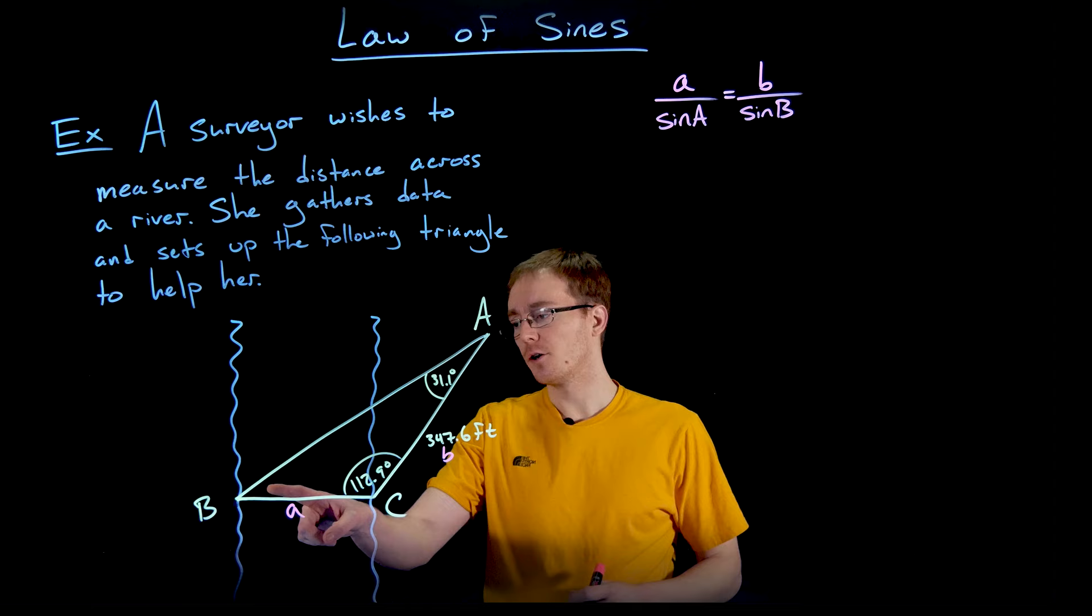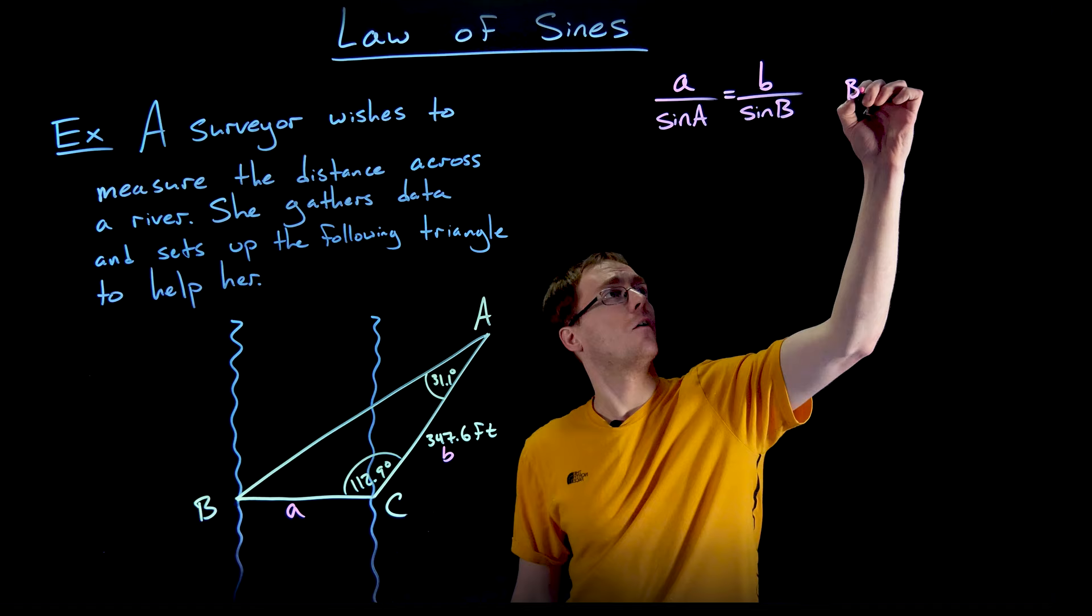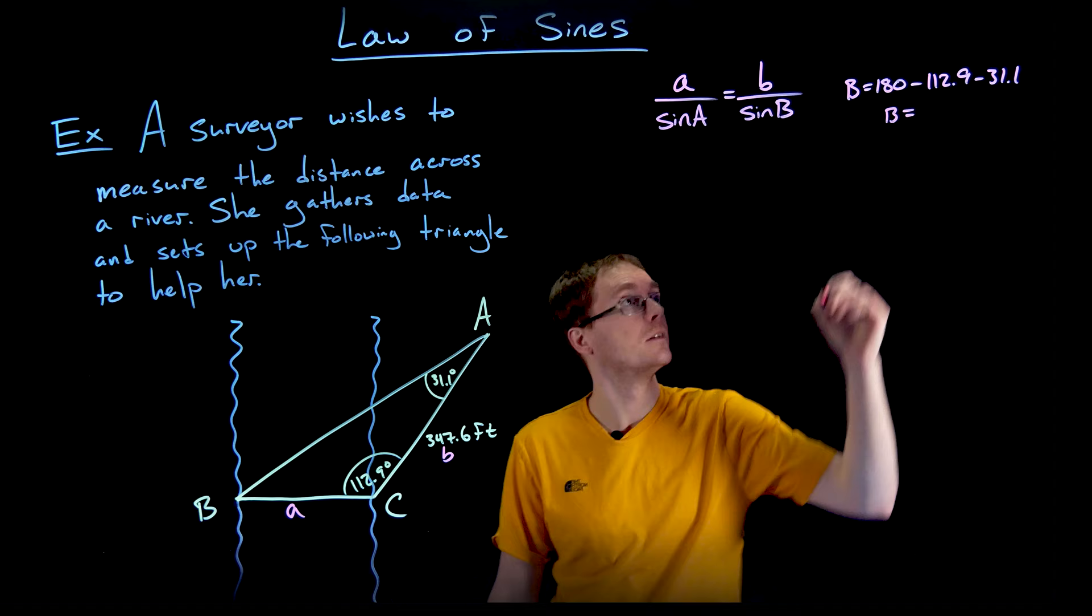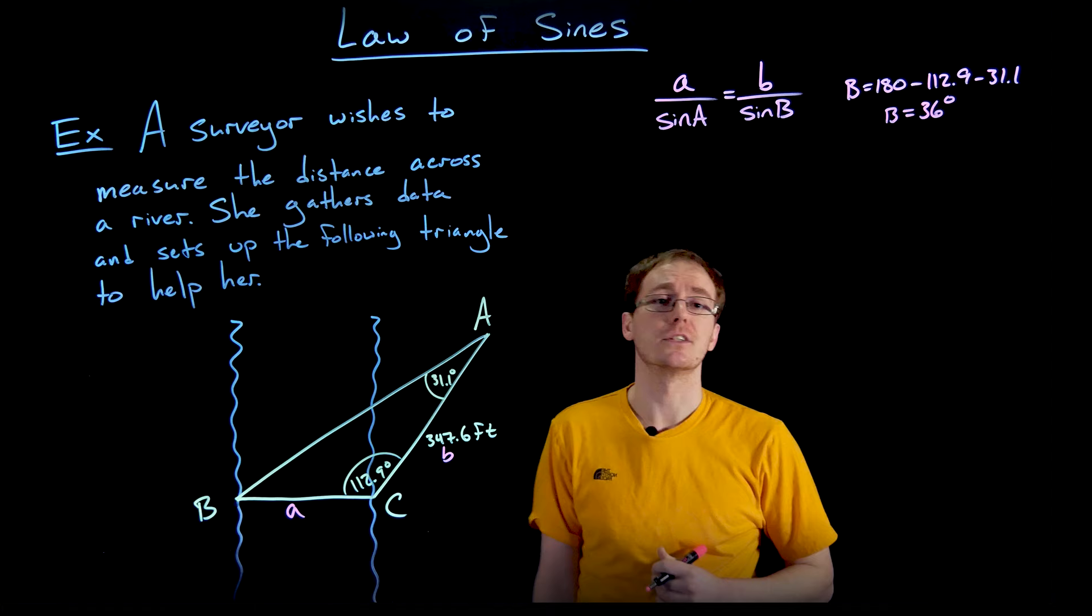Notice we don't know our angle B explicitly but we have enough information to find it. Remember all the angles have to add up to 180, so if we take 180 and subtract away our two known angles we'll get our remaining angle B. So do 180 minus 112.9 minus 31.1. If we take that difference we should find that angle B is 36 degrees.